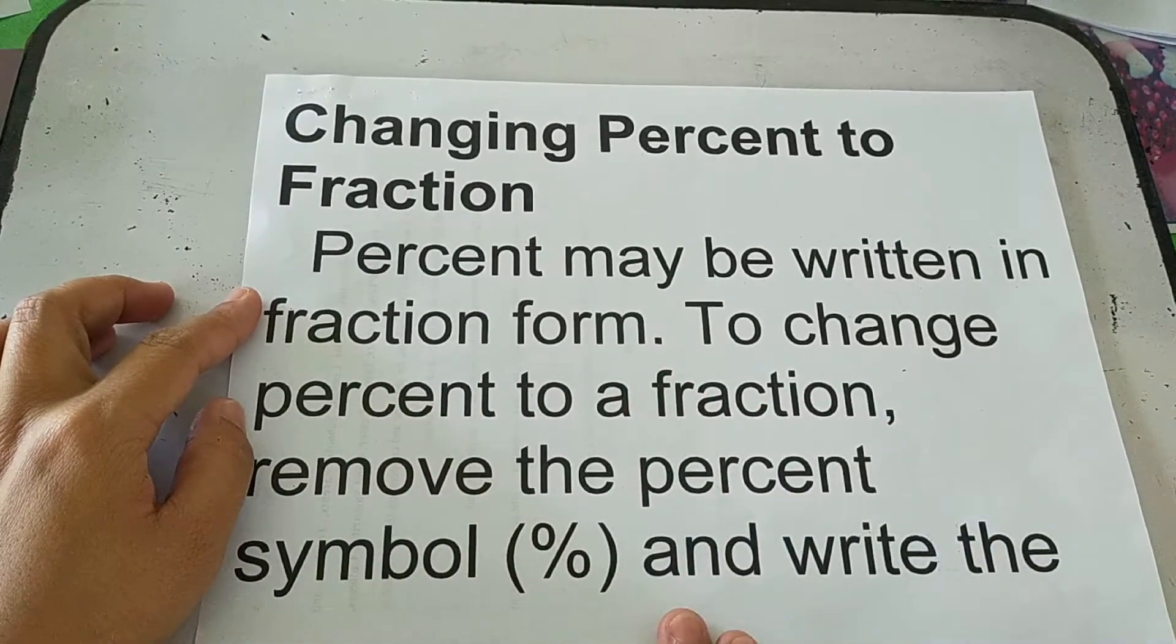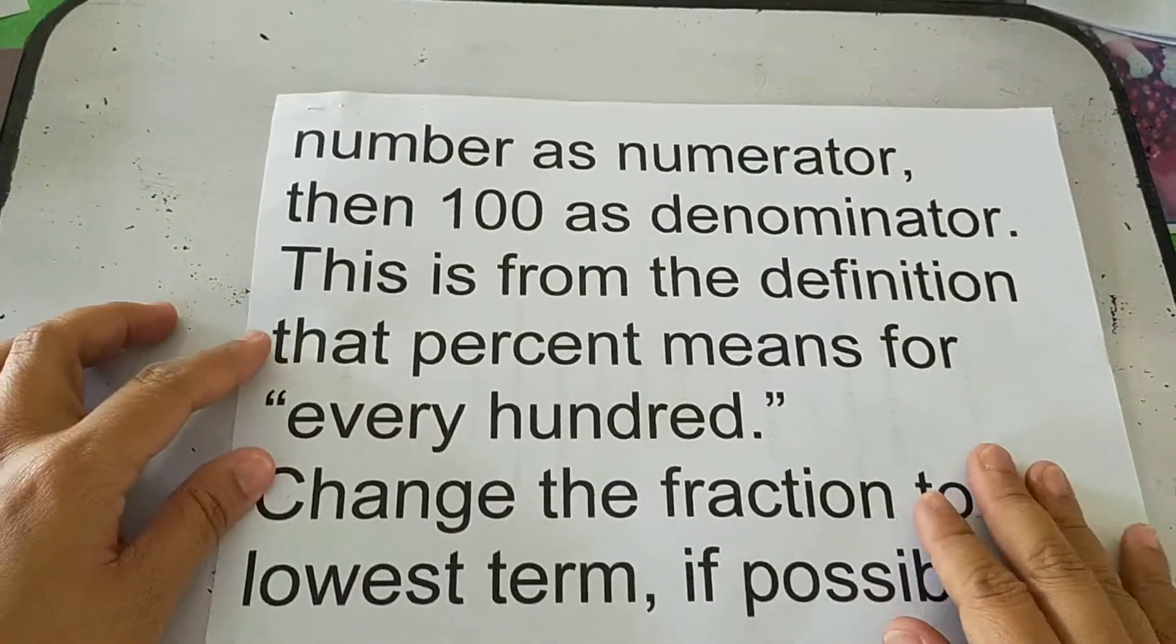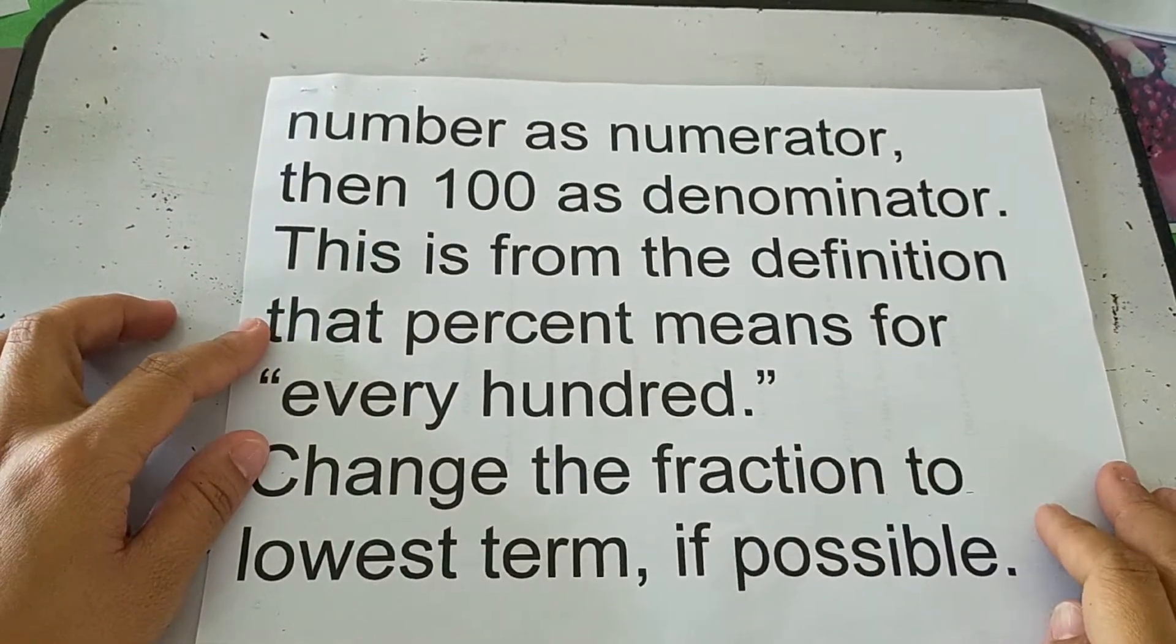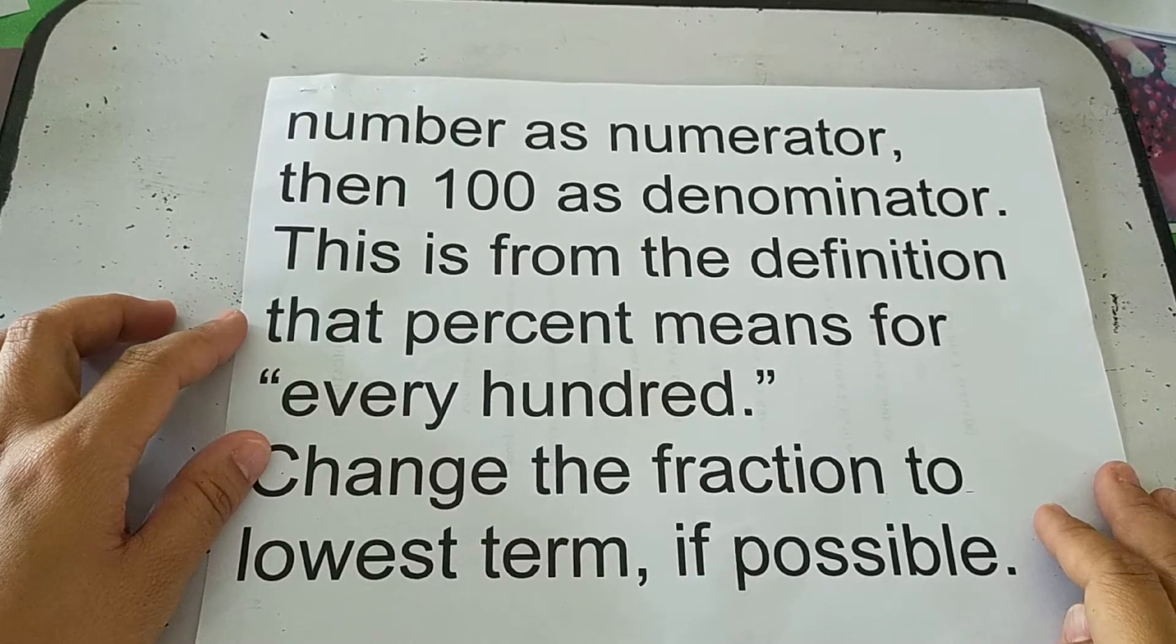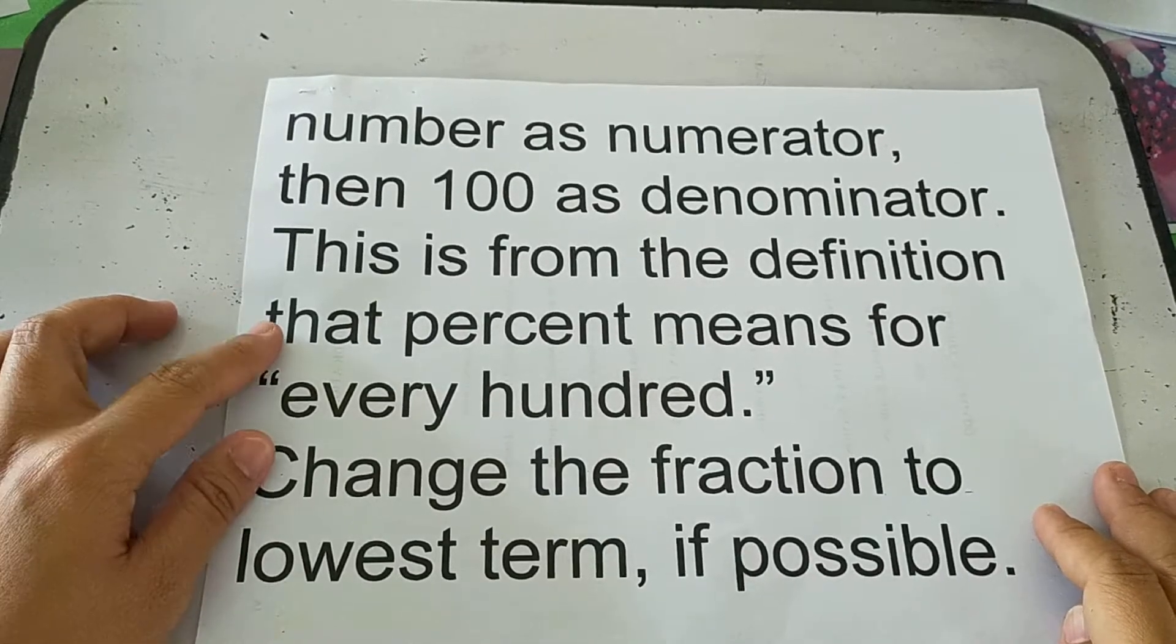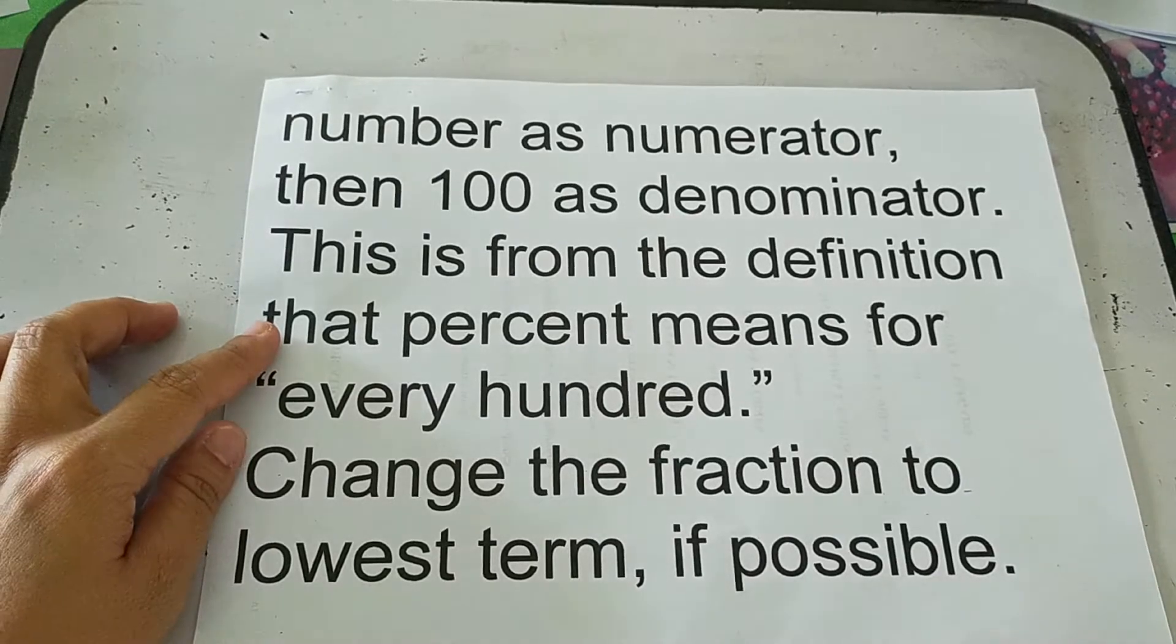Percent may be written in fraction form. To change percent to a fraction, remove the percent symbol and write the number as numerator, then 100 as denominator. This is from the definition that percent means for every 100. Change the fraction to lowest term if possible.